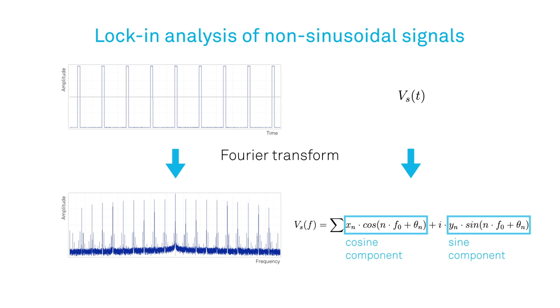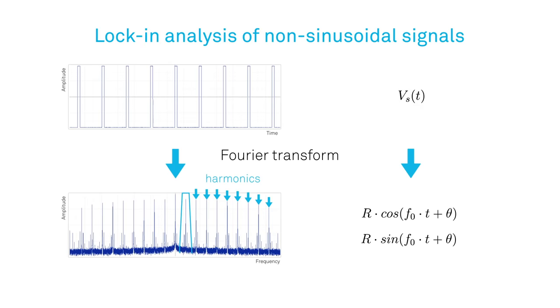Demodulation applied to such an expression is equivalent to selecting the terms with frequencies within one filter bandwidth around the signal reference. Usually, this reduces the infinite sum to a single sine and cosine term. All other frequency components average to zero.